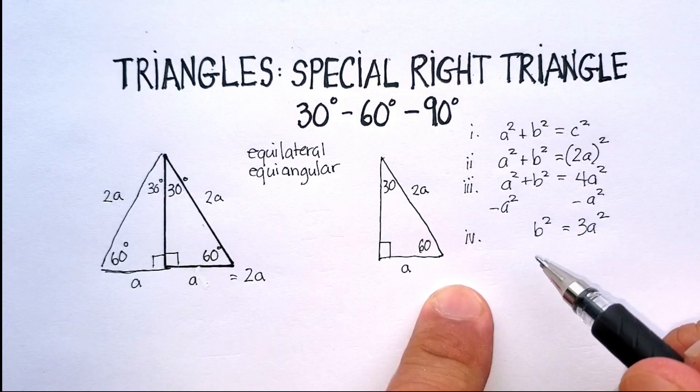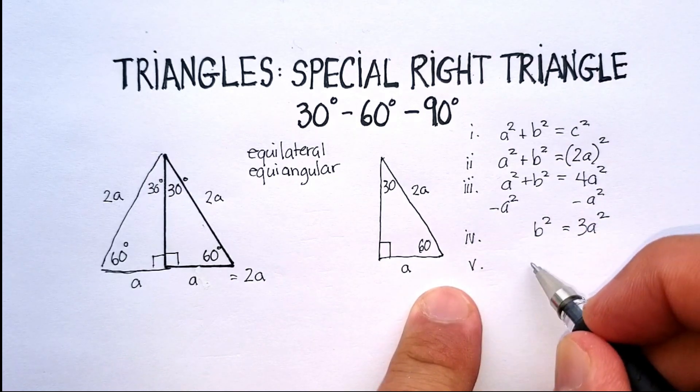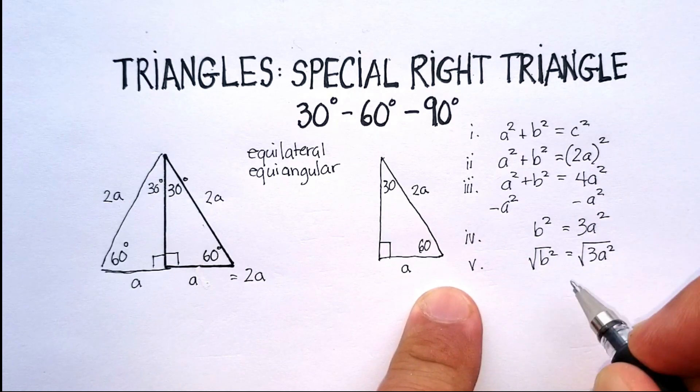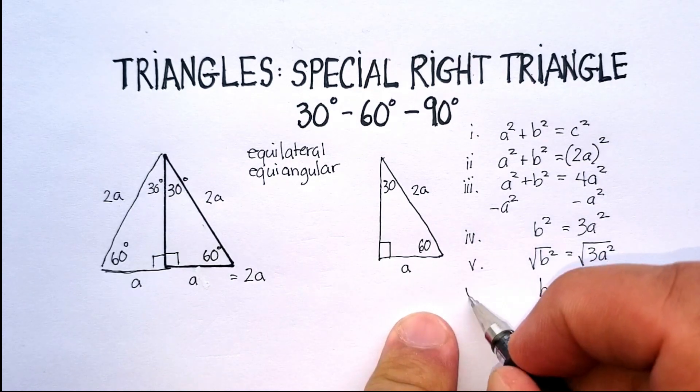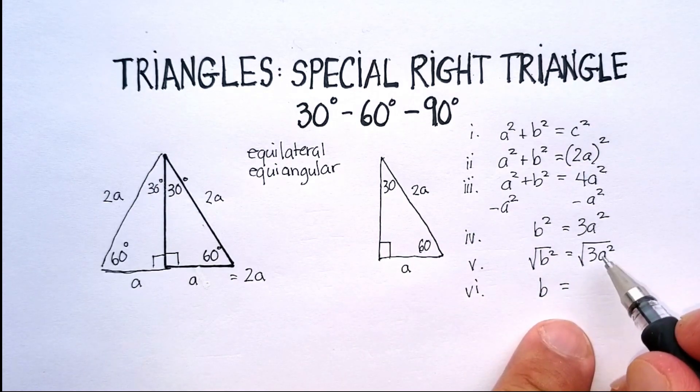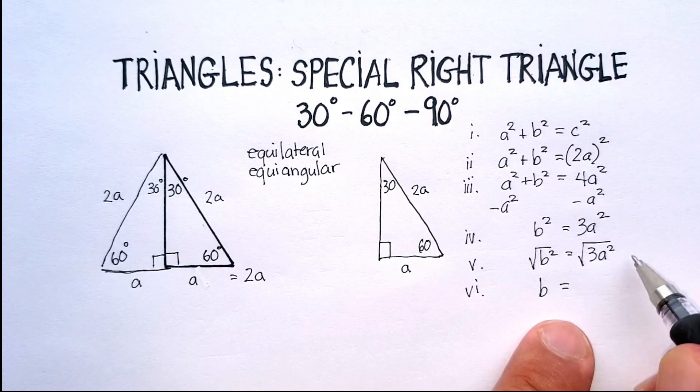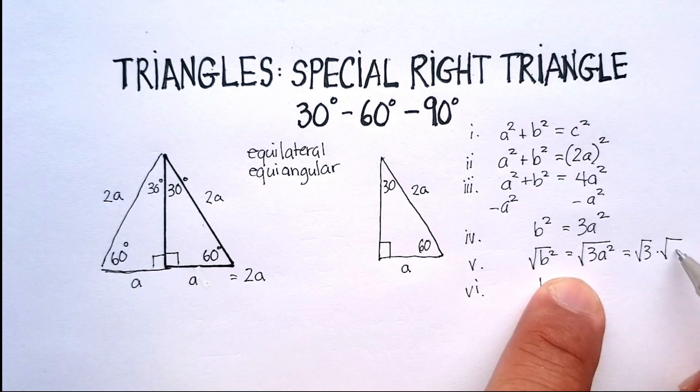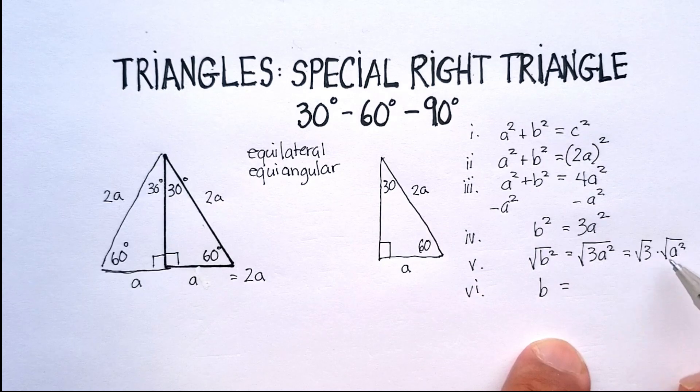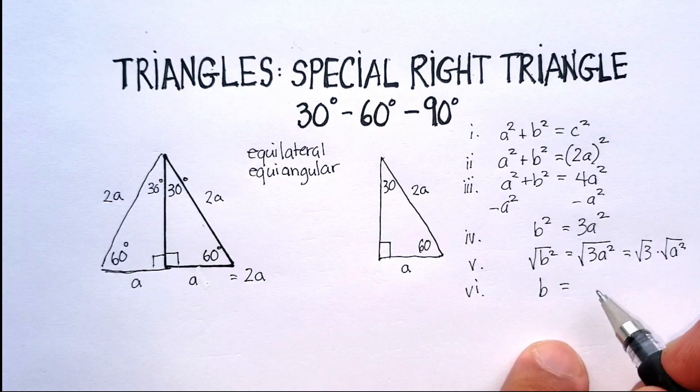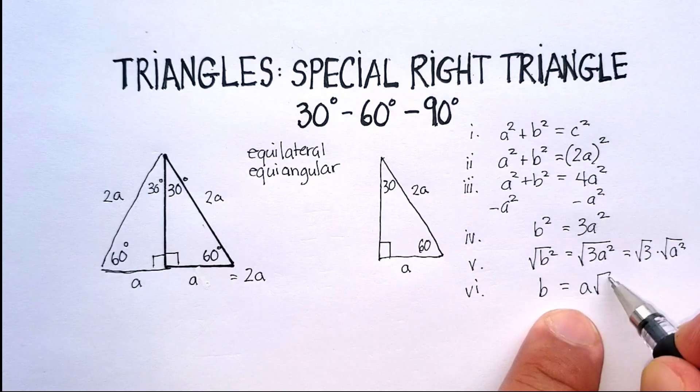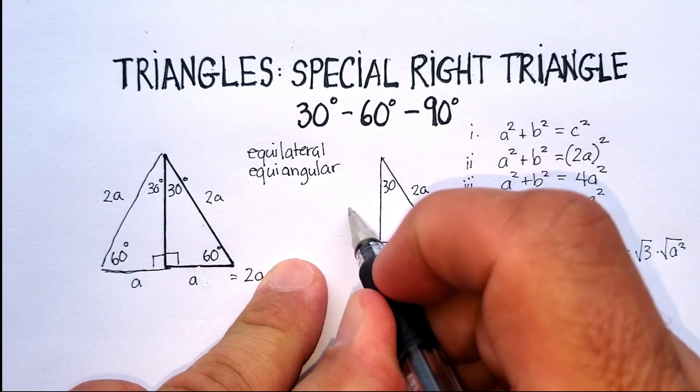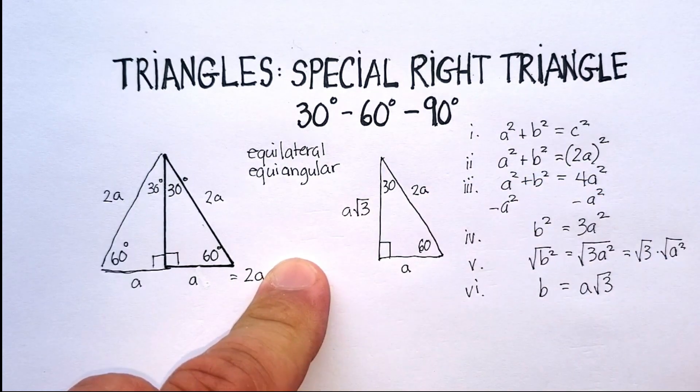I'm going to take the square root of both sides to get just B. And I'm going to end up with B is equal to, now, over here, remember, I can divide this up into two different parts. As long as it's all multiplication, I can say radical 3 times radical A squared. And of these two, I can find that the square root of A squared is just A. So I'm going to have A radical 3. And I'm going to go back and put it up into this triangle. And there you have it.